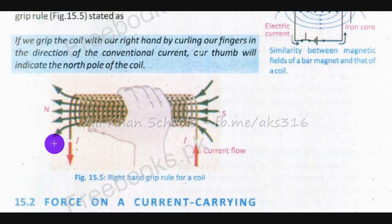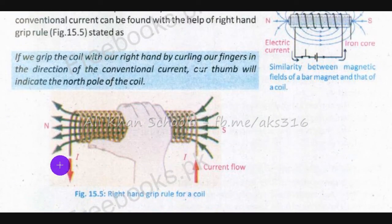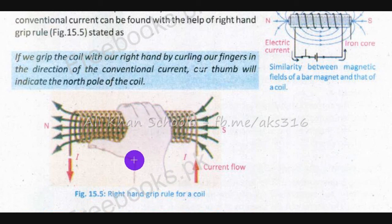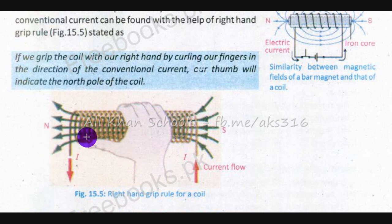Woh kehta hai ke current ja raha hai solenoid ke andar se. Hum kya karte hain — jis direction mein current flow ho raha hai loops ke andar se, usi direction mein hum ne apni ungliyan rakh leni hain. Aur jo aapka thumb hoga — jaise yahan pe yeh thumb hai — woh aapko bata dega ke us ki direction north pole ki hai.